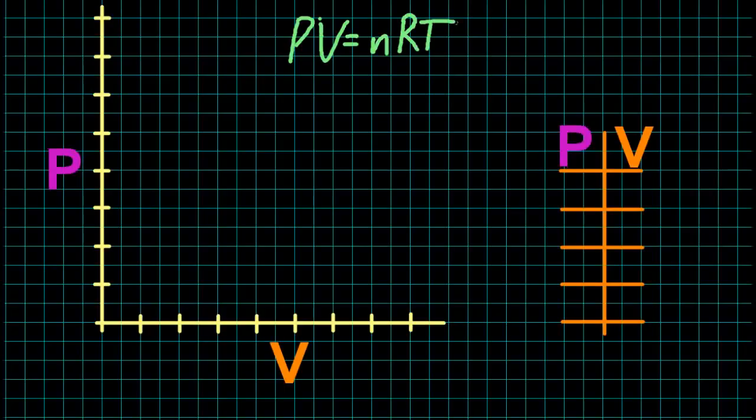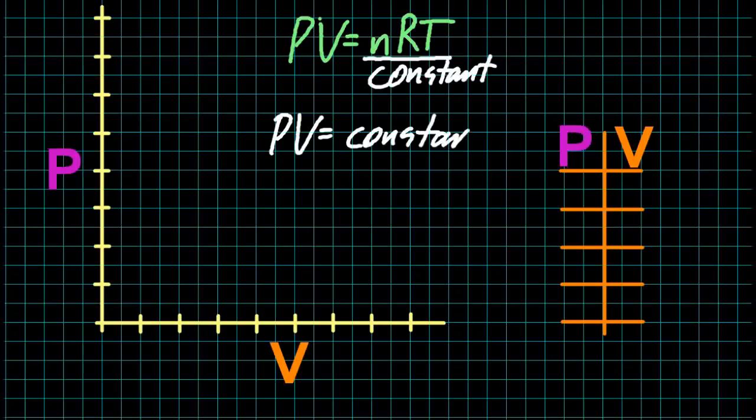And pressure versus volume. So we're going to keep the temperature the same, as well as nR, constants again. So PV is going to be a constant. So the only way to fix that, so that P is inversely proportional to V, is as one goes up, the other must go down. I'm going to choose 16 as my constant.